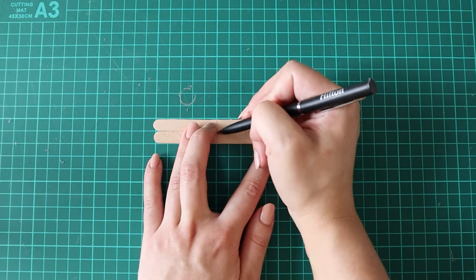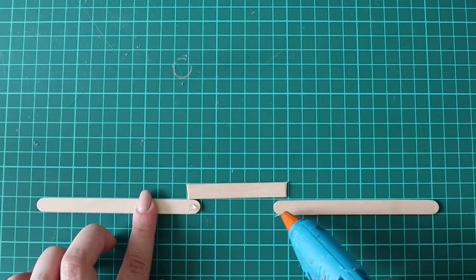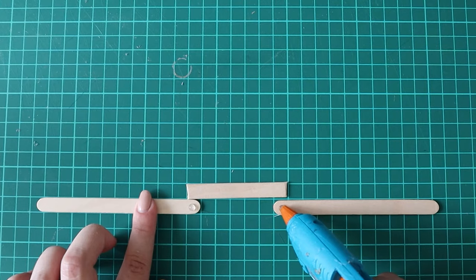The next piece in this set is going to be the slide. To start off with, I've cut two sticks down to about six and a half centimeters, and then I'm gluing two popsicle sticks to each end of the cut down sticks.